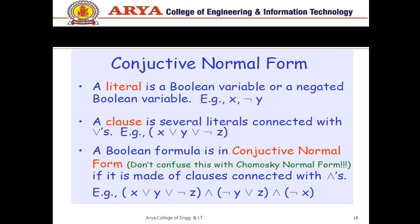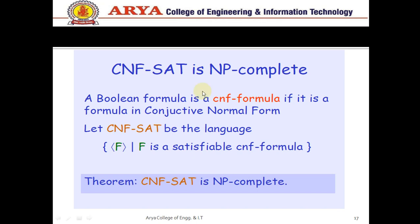Next, what are Conjunctive Normal Forms? These are known as CNF forms. Boolean variables are represented by normal x or NOT x (a negated boolean variable), and a number of clauses are present with several literals connected with the OR operator — for example, x ∪ y ∪ NOT z. A boolean formula is in conjunctive normal form if it is made of a number of clauses connected with the AND operator. We can see this is in CNF form.